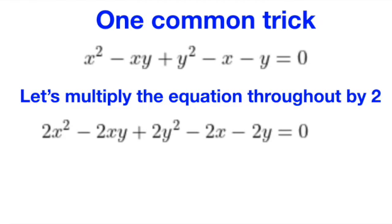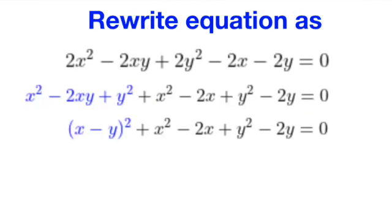A common trick which we can use is to multiply the entire equation by 2. Doing so, we get the 2xy we want, but at the same time, we also get another copy of x squared and y squared. Let's proceed with the factorization, and obtain the expression bracket x minus y squared plus x squared minus 2x plus y squared minus 2y.